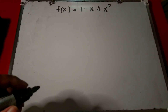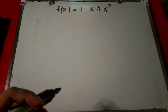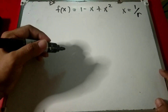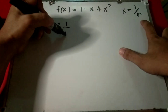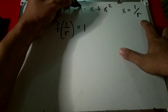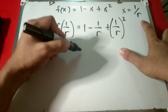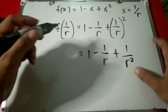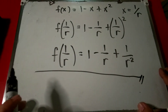Evaluating can also mean replacing x with an expression instead of a number. Let us evaluate the function for x equals 1 over r. We replace x with 1 over r, giving f of 1 over r equals 1 minus 1 over r plus 1 over r squared.